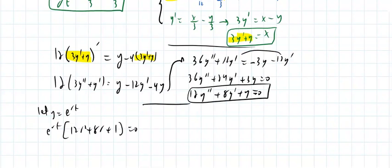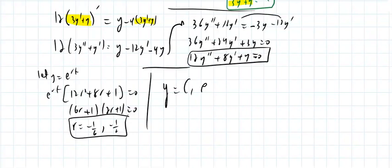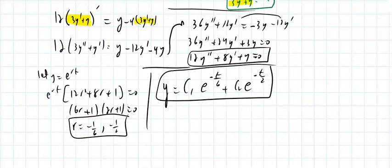Let y equal e to the rt. The characteristic equation is 12r squared plus 8r plus 1 equals zero, which factors into (6r plus 1)(2r plus 1). So r equals negative 1 over 6 or negative 1 half. Therefore y equals c1 e to the negative t/6 plus c2 e to the negative t/2.